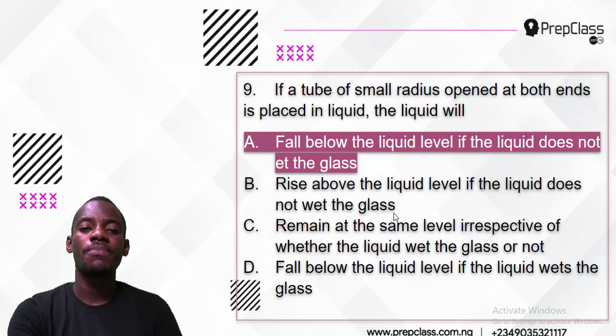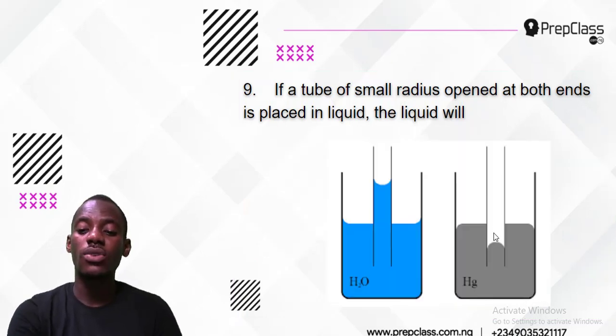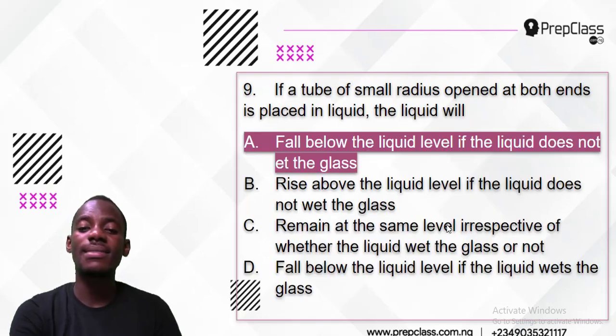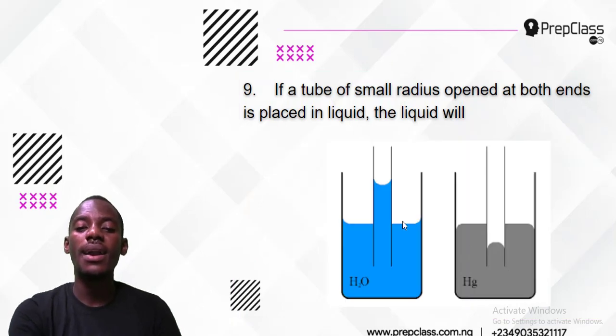Option B says rise above the liquid level if it does not wet glass - that's not true. Mercury does not rise, it doesn't, so that's wrong. C says remain at the same level - that's not true. D says fall below if the liquid wets glass - but water does not fall below, so that's wrong. So the answer is A.